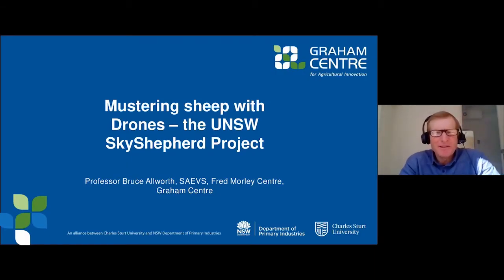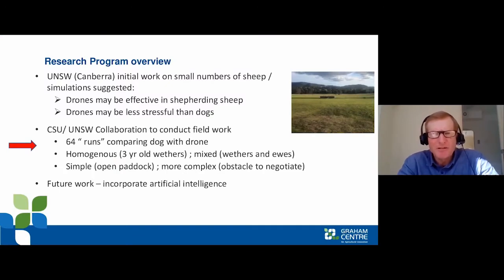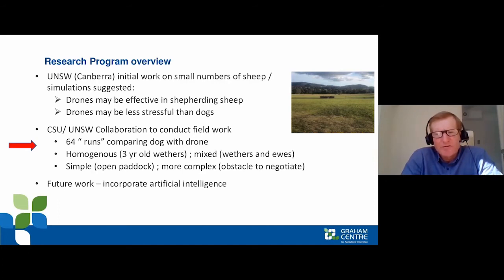I'd now like to reintroduce Bruce Allworth. This time we're talking about the work we've been doing with the University of New South Wales group at Canberra, with the Air Force and the mustering work they've been doing with drones. There's been a bit of publicity on this in the last couple of days. Basically, the group at Canberra did some work suggesting that drones might be useful for mustering sheep and might even be less stressful than dogs. They came to us and asked us to conduct some field work with them, which we've done — 64 runs. The main work they're now working on is incorporating artificial intelligence so that the potential is a drone would go out and do the mustering without needing to be piloted. At the moment, all the work we've been doing is with piloted drones.